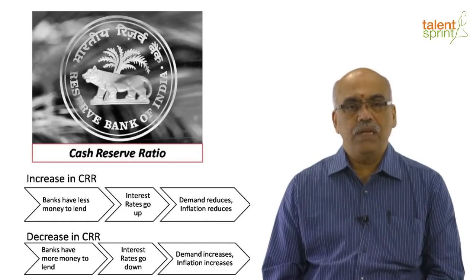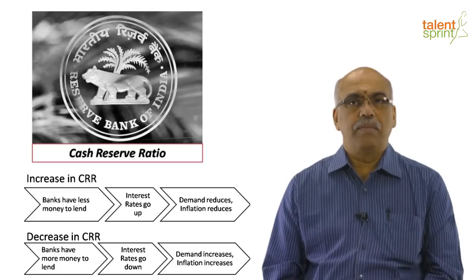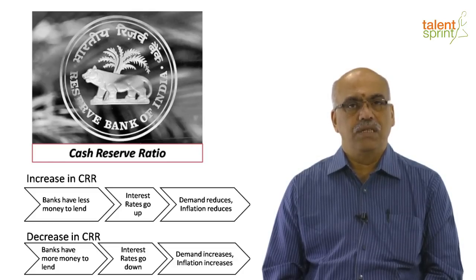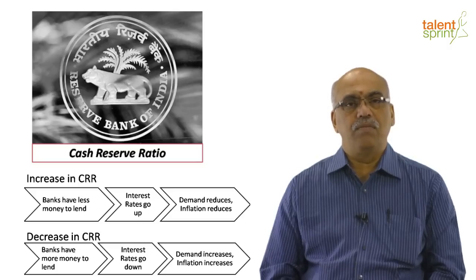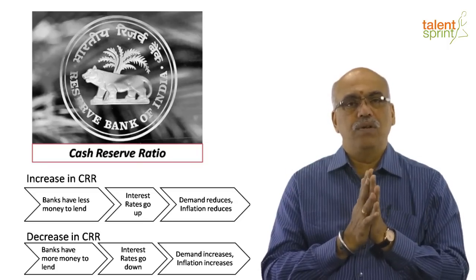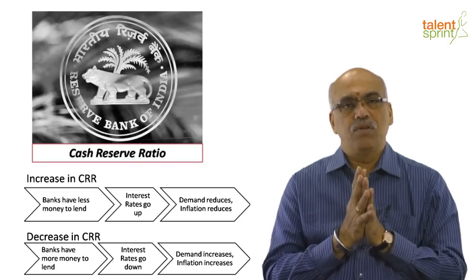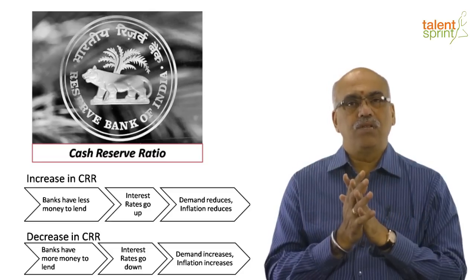An increase in CRR means less money for banks to lend, so interest rates go up, leading to less demand and thereby reducing inflation. A decrease in CRR, on the other hand, means more money for banks to lend, so interest rates come down, increasing money supply in the economy. More money supply leads to more demand, which causes prices to rise, leading to inflation.